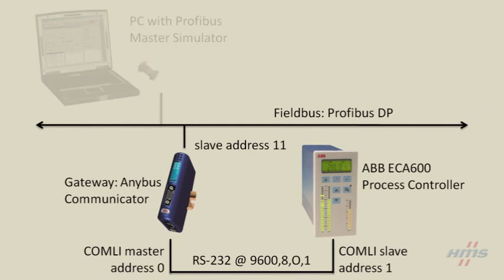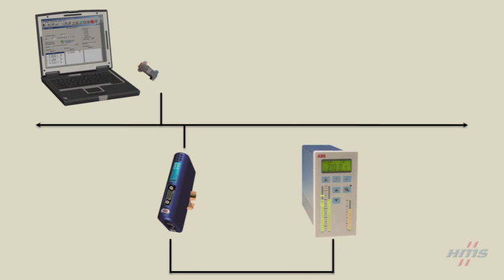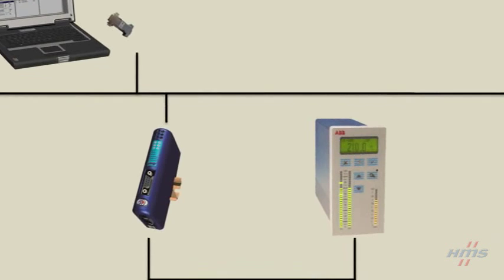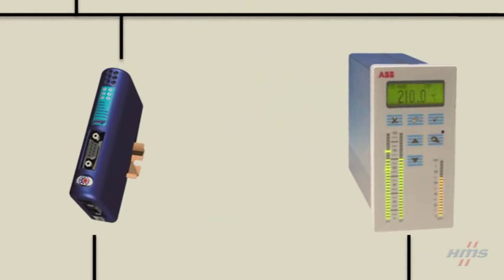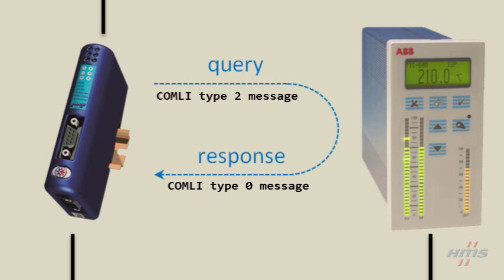We also have a PC with Profibus Master Simulator to monitor the fieldbus data. What we try to accomplish is having the communicator request the process and setpoint values from the ECA and interpret the ECA response. Our focus will be on how a custom transmit and receive frame may be constructed with the ABC config tool.